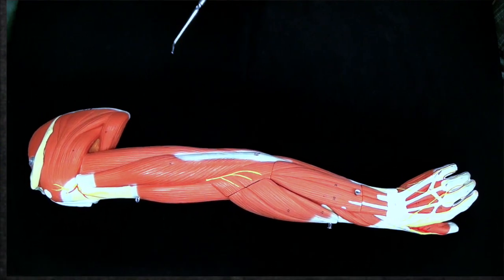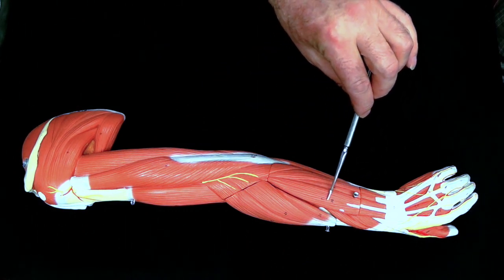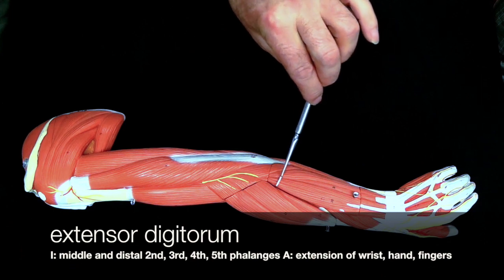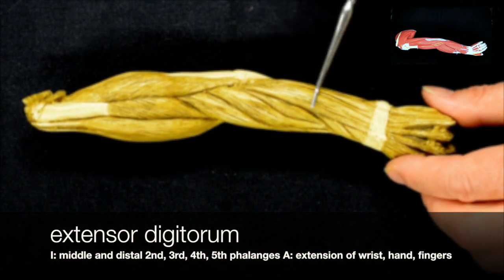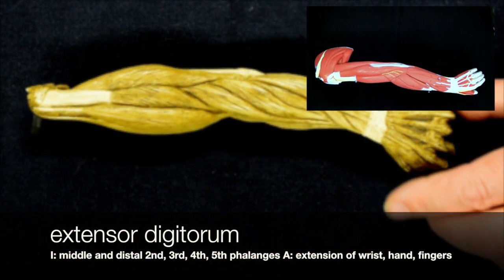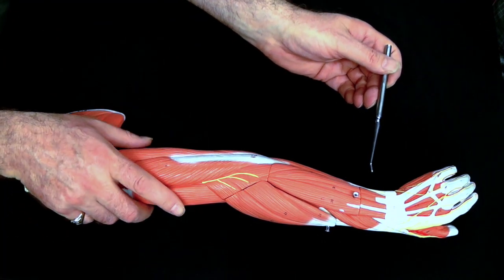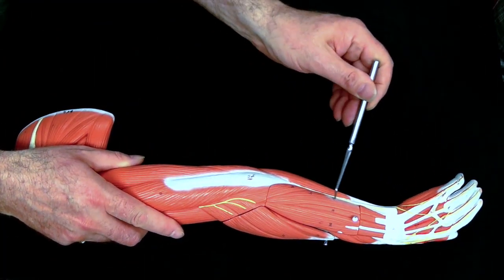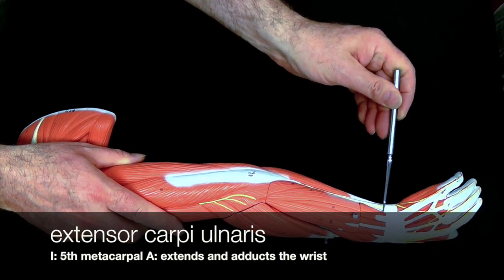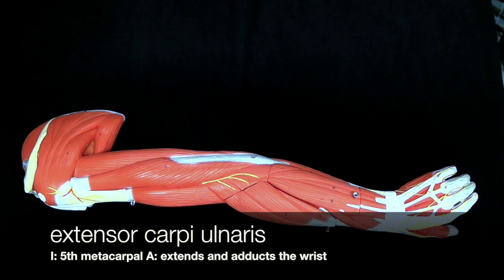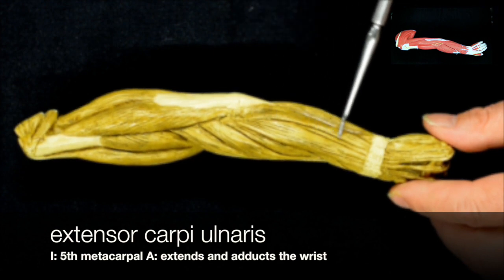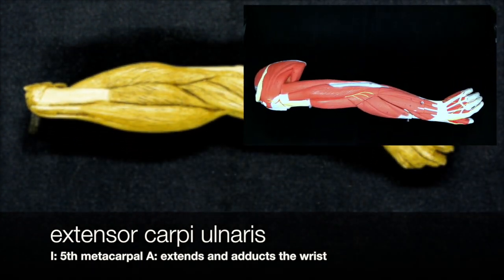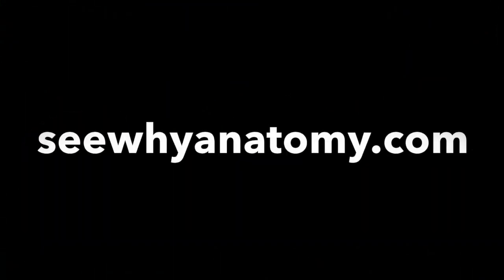Right next to that we have the extensor digitorum, which can be seen on this model. And then the next muscle over is the extensor carpi ulnaris, which can also be seen on our model here.